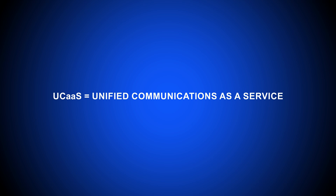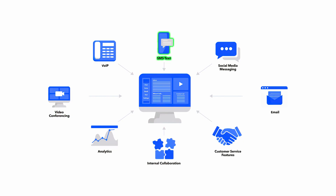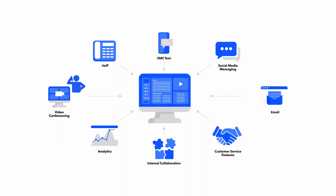UCaaS, or Unified Communications as a Service, is a cloud-based communications and collaboration tool combining multiple channels — voice, video calling, SMS text messages, team chat, and email — into one streamlined interface. Real-time omnichannel syncing allows users to instantly switch between multiple channels and devices over the course of a conversation, continuing the discussion without missing a beat.